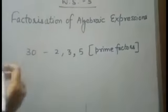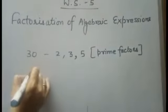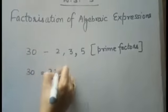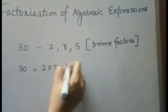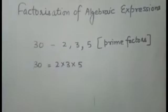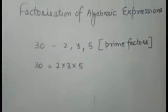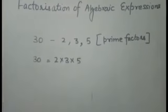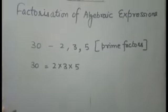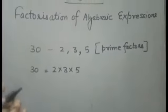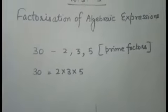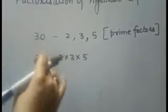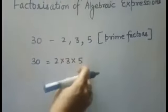Now, 30 can be written as the product of its prime factors: 2 times 3 is 6, times 5 is 30. So, 30 is equal to 2 into 3 into 5. We can express any number as the product of its prime factors — instead of 30 you can take any number.